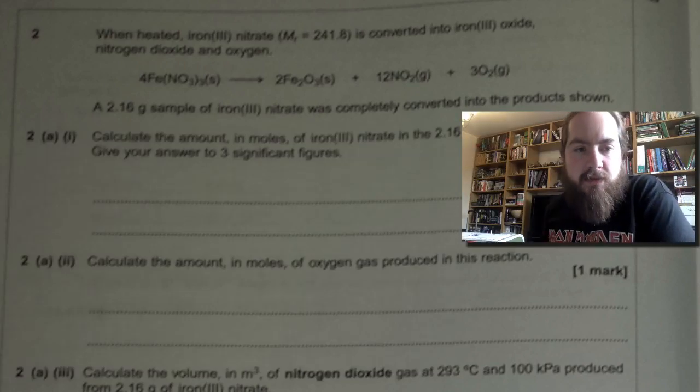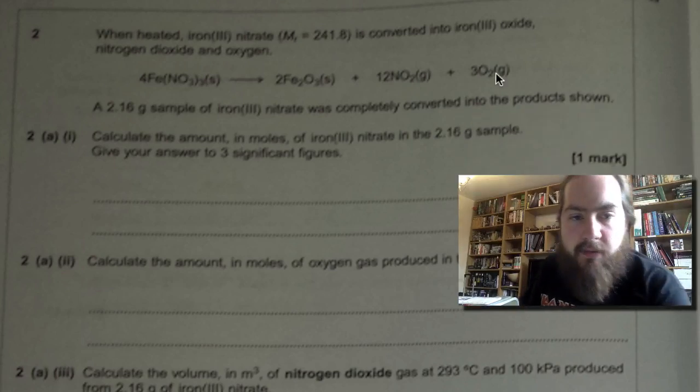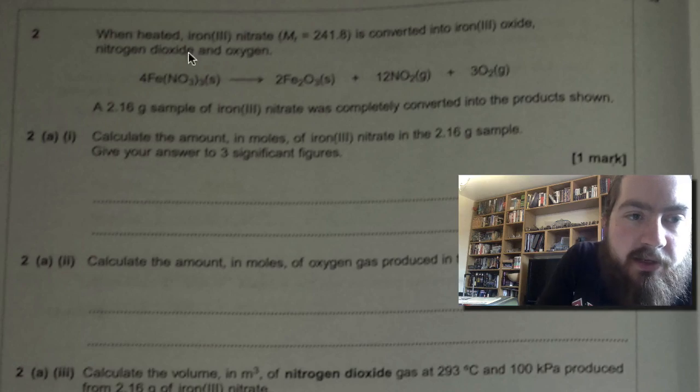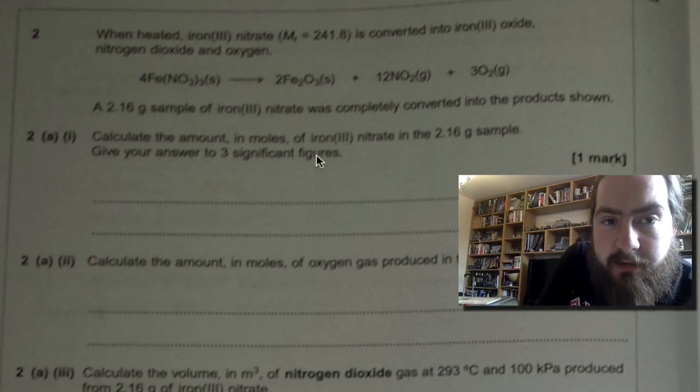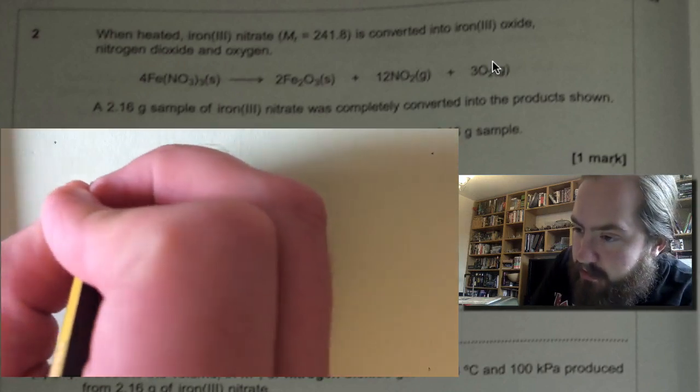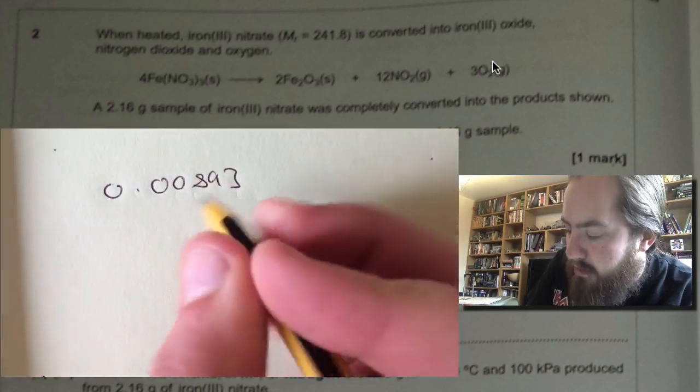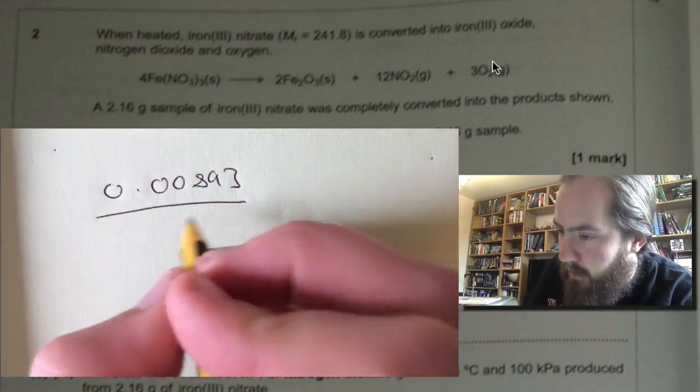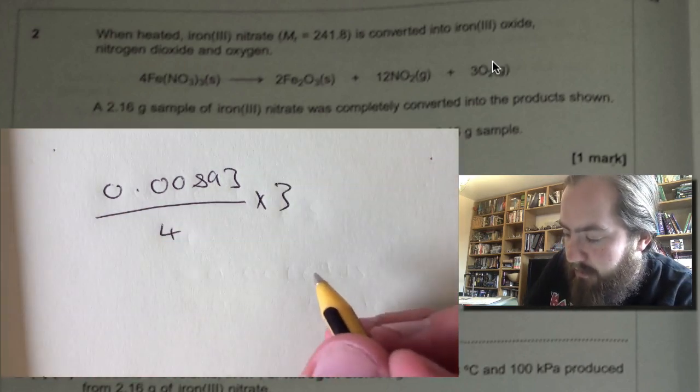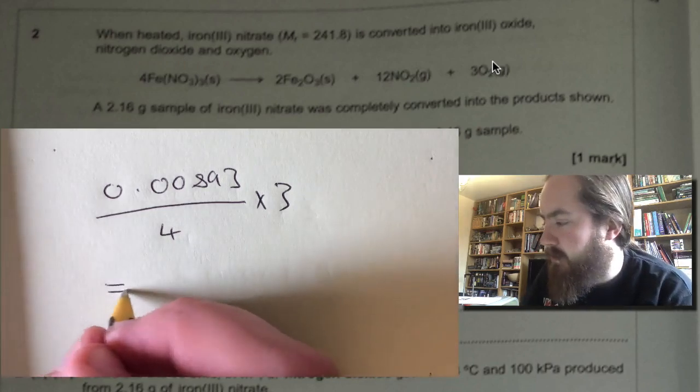Okay, part two. Calculate the amount in moles of oxygen gas produced in this reaction. Now from our reaction we can see that we've got four moles of iron nitrate goes to make three moles of oxygen, so we're going to take our answer from the previous question, which is 0.00893. We're going to divide that by four and then we're going to times it by three, and that'll give us our number of moles of oxygen.